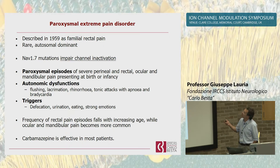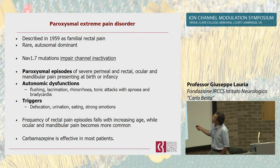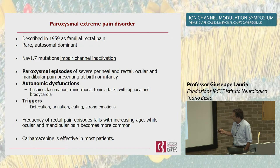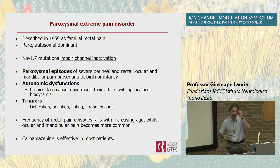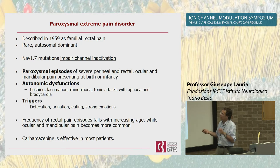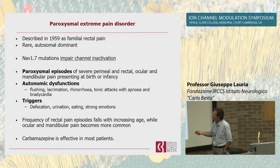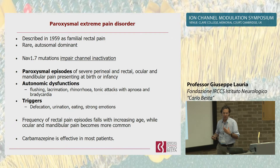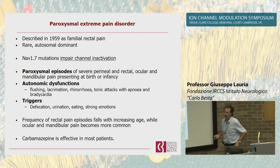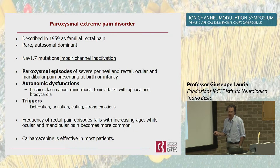Another condition is paroxysmal extreme pain disorder, described in the 1960s as familial rectal pain. It is a very rare autosomal dominant condition caused by mutations in the Nav1.7 gene that have a different effect on biophysical properties. It is characterized by paroxysmal episodes of pain located in the perineal and rectal area, and in the ocular and mandibular regions. Rectal pain frequency decreases with age, while ocular and mandibular pain can become more common over time. So when we see adult patients, we might keep in mind that if pain started in infancy, it could be caused by this - though it is a very rare condition.